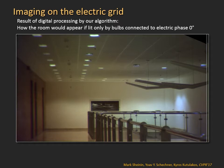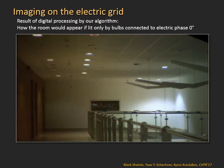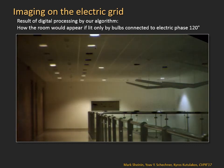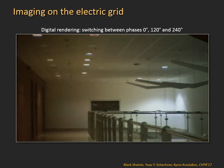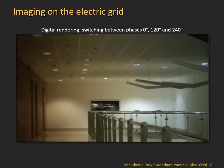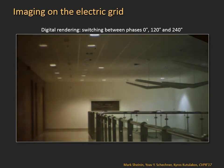The scene can be shown as composed of distinct illumination components. Here we show a digital rendering of the hallway as if only bulbs connected to AC phase 0 degrees were active. And here is the hallway as if illuminated only by bulbs connected to phase 120 degrees. And the same for phase 240 degrees. Let's switch between the sources again to observe the different illumination components.